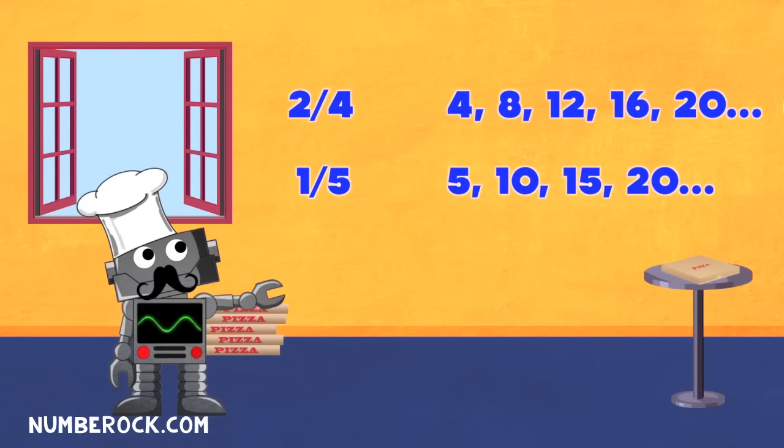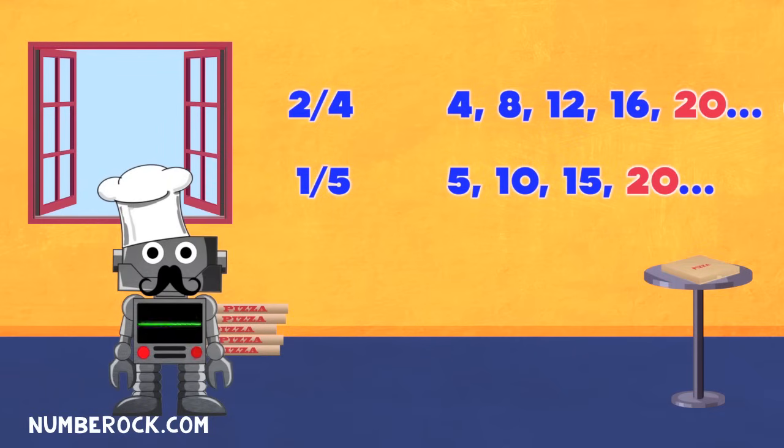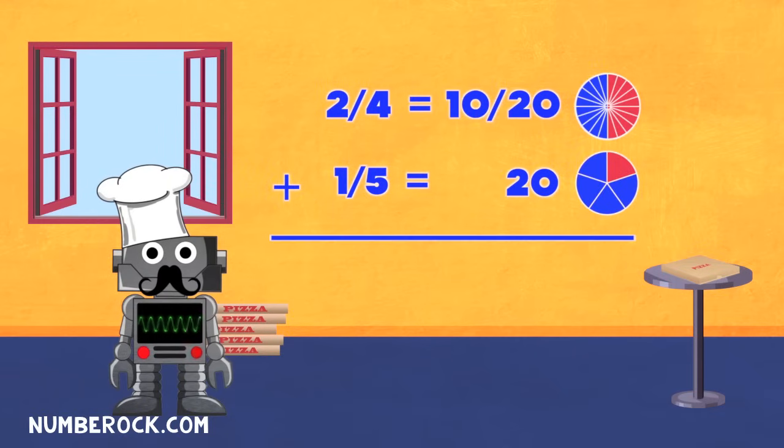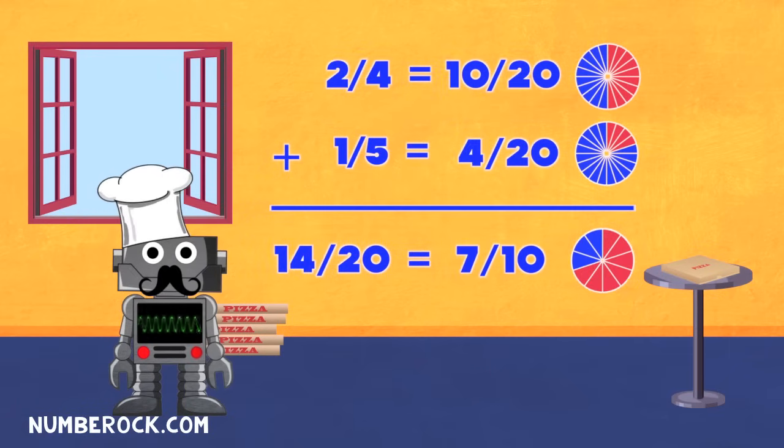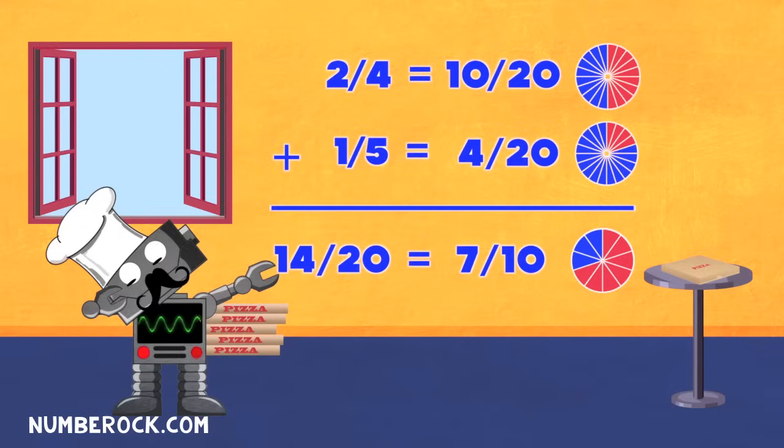Find the least common multiple, that's the first action. Next is finding equivalent fractions, then do the addition or subtraction. Simplify like an automatic reaction.